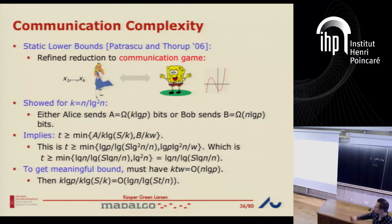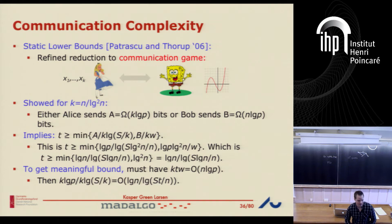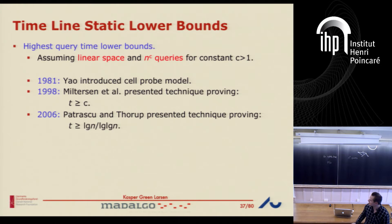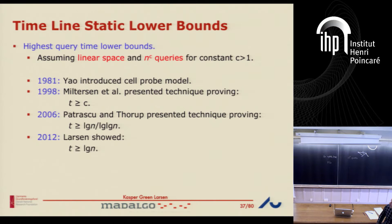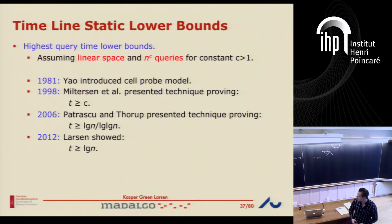So we're at this slide. We just finished this technique where Alice has k queries, Bob has one input, and you could get better lower bounds — log n over log log n lower bounds in this linear space setting with polynomially many queries. So that's the best you can get from this technique. The last result in this timeline is you can push it slightly higher to log n in the linear space setting, a result of mine from 2012.